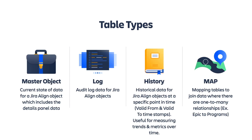In this section, you learned about some different table types in Enterprise Insights. Master object tables contain the current state of data for a Jiraline object. Log tables contain the audit log data for a Jiraline object such as date timestamps, the type of action, and the user that made the change. History tables contain the historical data for Jiraline objects at a specific point in time and are useful for measuring trending and metrics over time. And lastly, map tables are mapping tables to join data between two Jiraline object tables where there are one-to-many relationships.